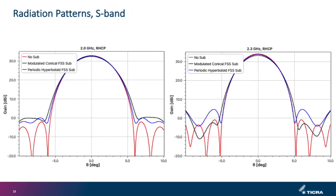Similarly, we show the radiation patterns at the upper and lower frequencies in S-band. The red curves show the case without any subreflector, the black curves show the patterns for the optimized modulated conical FSS, and the blue curves show the patterns for the periodic hyperboloid FSS. The performances are very similar, though the modulated FSS provides an additional loss of approximately 0.3 dB compared to the periodic hyperboloid FSS. In all cases, the gain is well above 30 dBi as specified in the requirements.